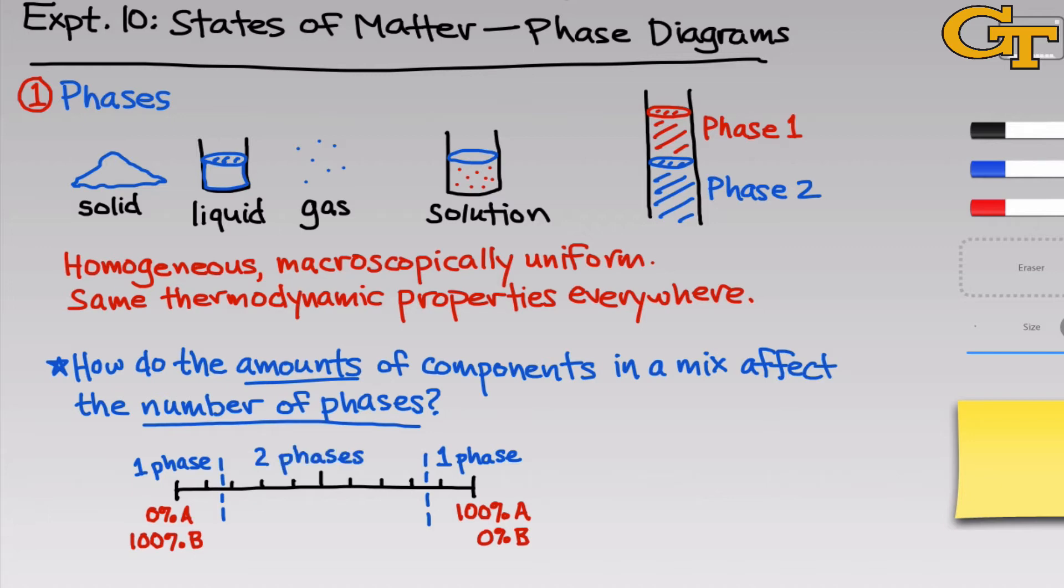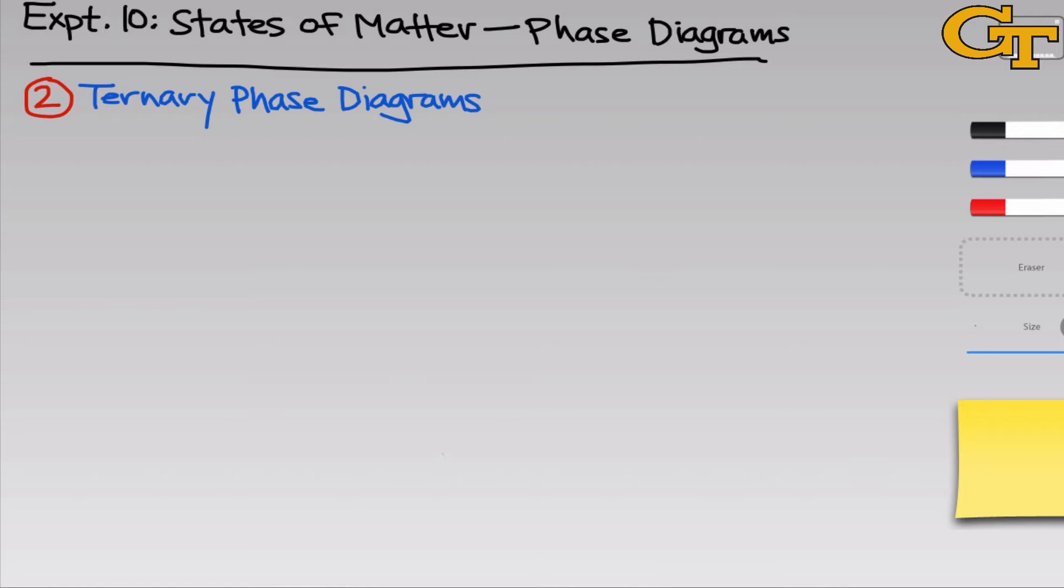The situation becomes more complicated when three components enter the mix, and we'll explore this in more detail right now. The three components we'll work with in this experiment are water, n-propanol, and hexanes. And mixtures of these three components have some pretty interesting properties.